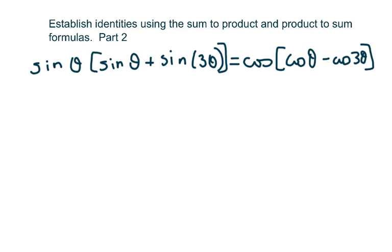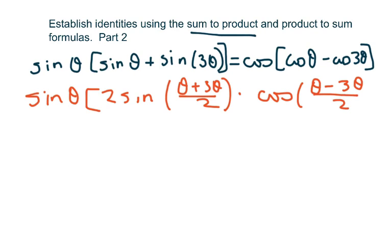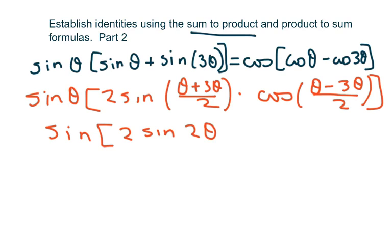We're going to work on the left side and write these as sum to product. We're going to get sine of theta times 2 sine of (theta plus 3 theta) over 2 times cosine of (theta minus 3 theta) over 2. This equals 2 sine of 2 theta times cosine of negative theta, which is positive theta.